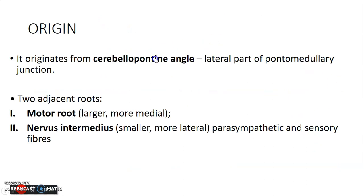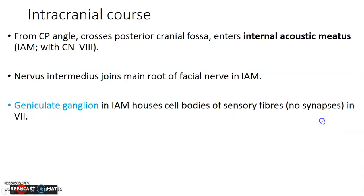The origin of the facial nerve: it exits at the cerebellopontine angle at the lateral part of the pontomedullary junction. You'll see two roots — a motor root which is larger and more medial, and the nervous intermedius which is smaller and more lateral. The nervous intermedius contains parasympathetic and sensory fibers of the facial nerve.